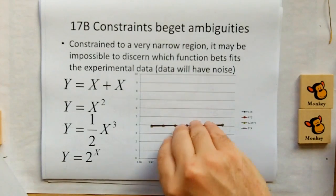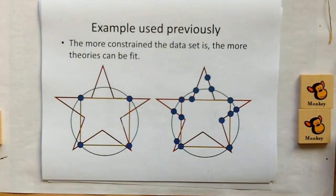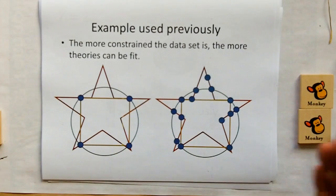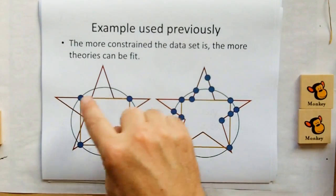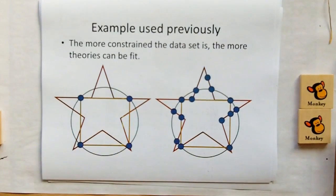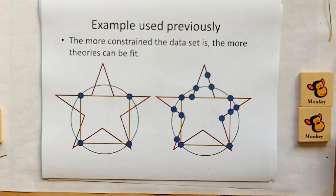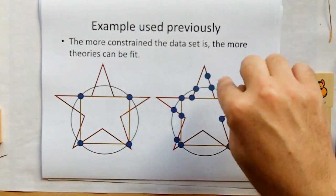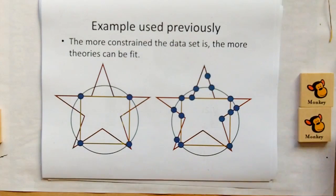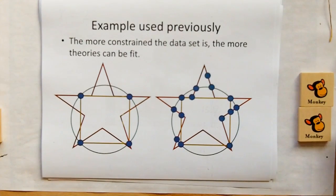That will be covered again when we do the polytheorism, which will be the next video. If you have only a limited number of measurements — the blue dots — you can fit a lot of theories to a limited set of measurements, a small footprint. As you expand the number of measurements you have, you're going to have one theory that disambiguates above the others.